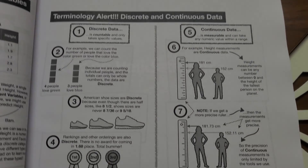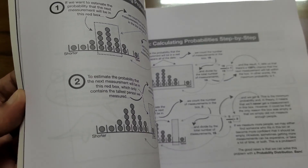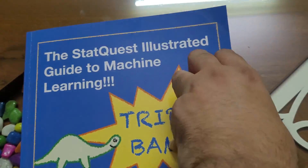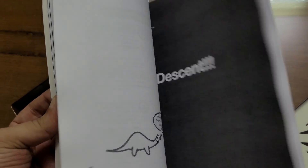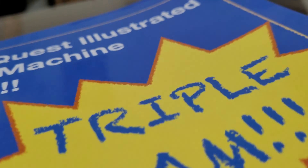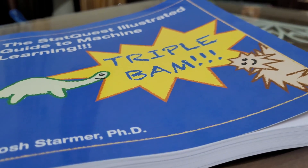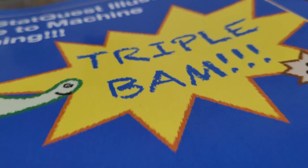Another standout feature of this book is its visual approach. The book is filled with colorful illustrations and diagrams that help clarify key concepts and make the material more engaging. This makes it a great resource for readers who are new to the field, as well as those who want to deepen their understanding of machine learning and deep learning algorithms. Overall, I highly recommend it to anyone who wants to learn about machine learning in a fun and engaging way.